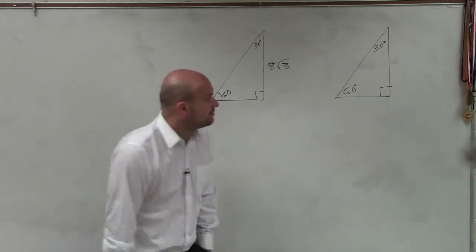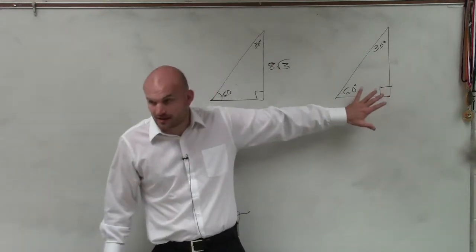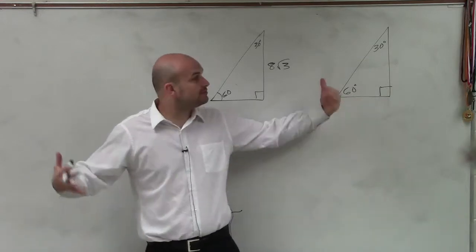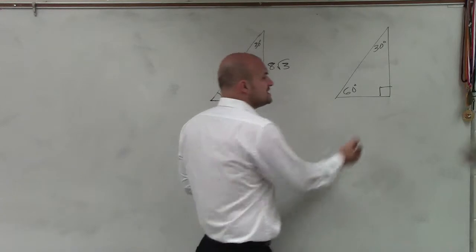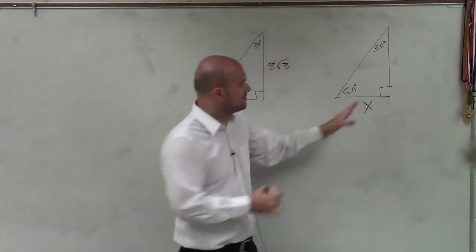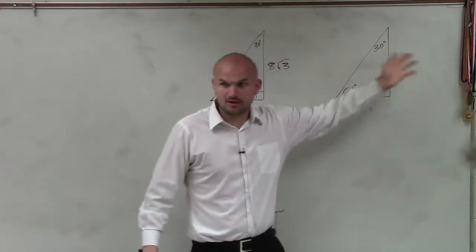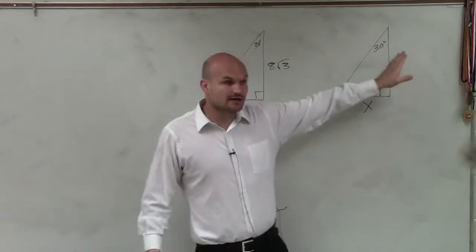So the 30-60-90, here's our angles, right? And what we talked about was the relationship between the sides. Remember there's two legs and the hypotenuse. There's a short leg and a long leg.